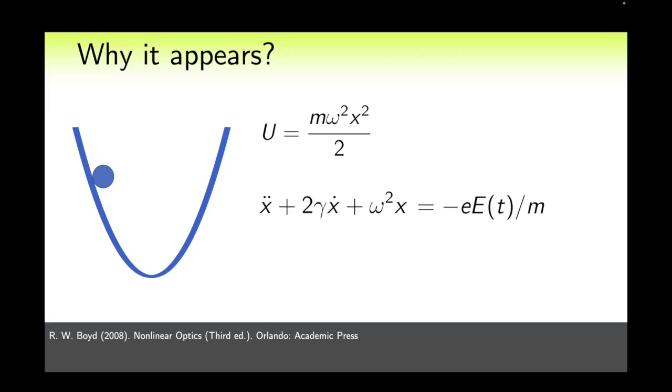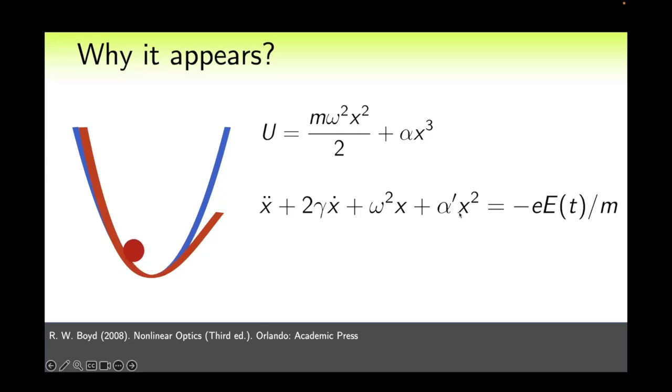But why does such a term even appear? In the Lorentz atom model an atom is considered as a harmonic oscillator and polarizability is related to the displacement of the electron X. At the same time, the equation describing the displacement is just the usual equation for a damped oscillator. Let us assume that the medium has some asymmetric structure, an asymmetric crystal lattice. Then we can expect that the potential will also be asymmetric, which will lead to the appearance of a term in the potential proportional to X cube and accordingly the equation will also change. A term proportional to X square will appear.